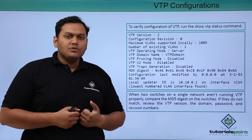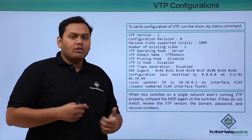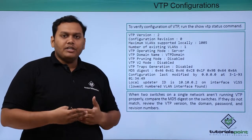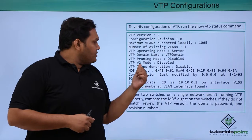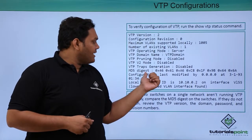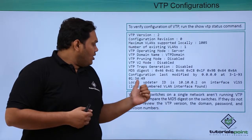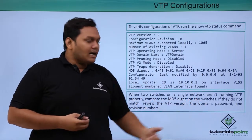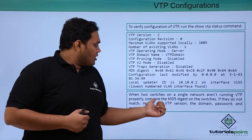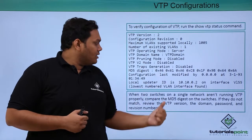As discussed in previous chapters, VTP pruning is still disabled. To enable it, you need to configure the VTP pruning mode again. VTP v2 mode shows as disabled here, and there is an MD5 digest number shown. When two switches on a single network are not running the same VTP configuration, you compare the MD5 digest number.